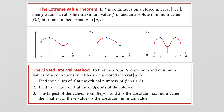So now let's talk about how you actually find these values. To find the absolute maximum and minimum values of a continuous function on a closed interval, we use the closed interval method. Step one: find the values of f at the critical numbers of f in the interval from a to b. Step two: find the values of f at the endpoints of the interval. Step three: compare these values. The largest value is your absolute maximum value and the smallest is the absolute minimum value.